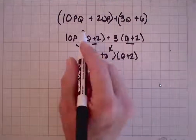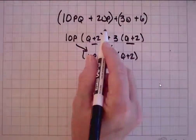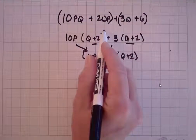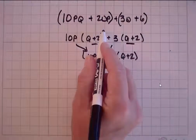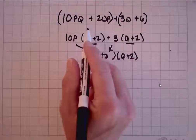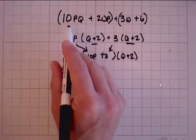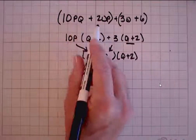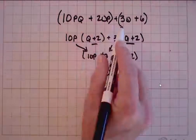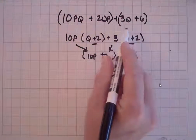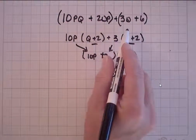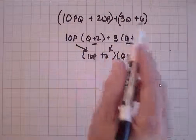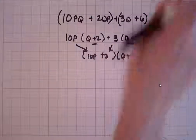I had to recognize, first of all, it was four terms — that's kind of a flag for me. Secondly, I noticed that these first two terms had a couple of things in common, and the last two terms had a factor in common. So those are some of the things you look for.